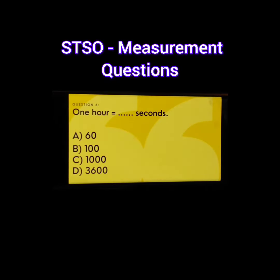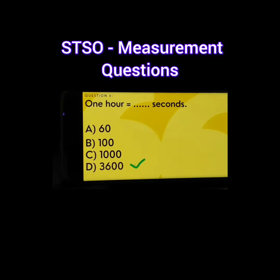Question number 6. 1 hour equals dash seconds. A. 60, B. 100, C. 1000, D. 3600. The correct answer is D. 3600.